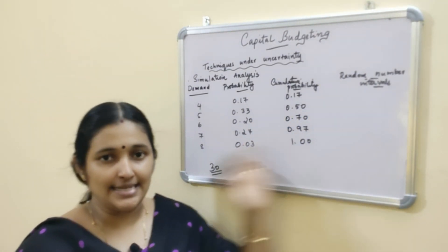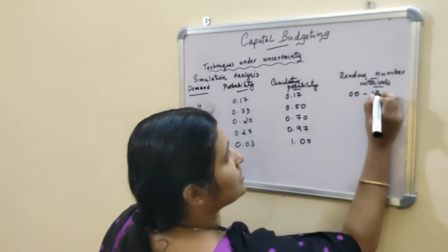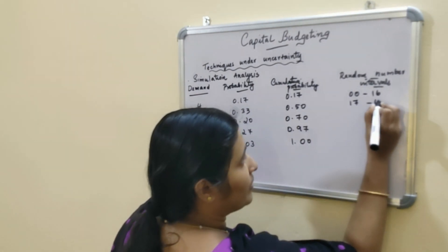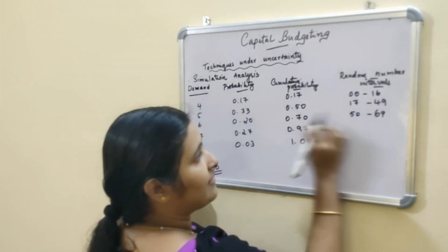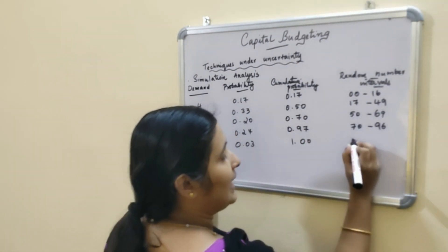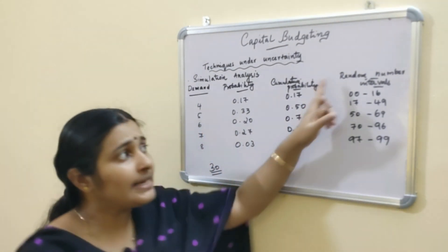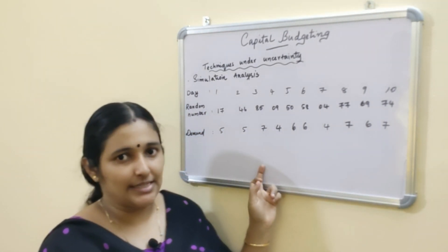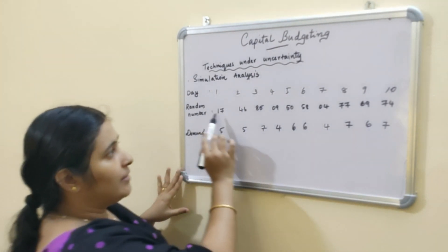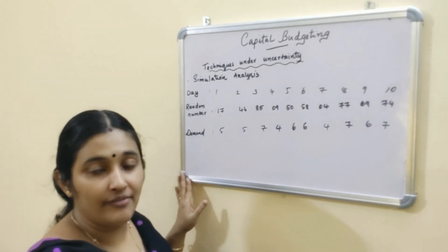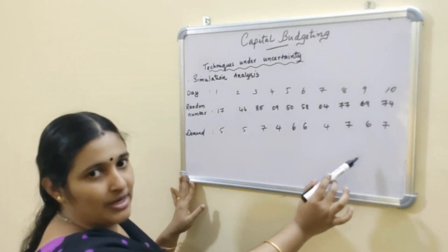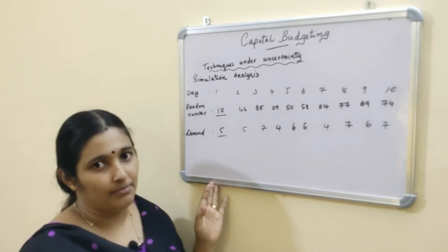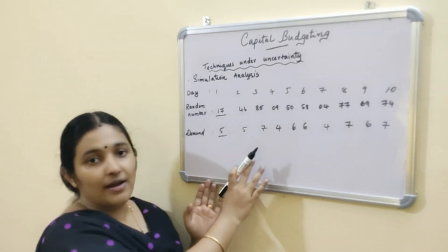We then set the random number intervals. The first interval is 00 to 16, the second is 17 to 49, the third is 50 to 69, the fourth is 70 to 96, and the fifth is 97 to 99, totaling 100. Using the given random numbers, we map each random number to its interval to determine the simulated demand for each of the first 10 days of the month.